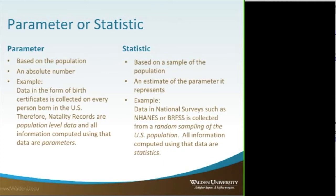Just a couple of basics before we get started. You may hear the term parameter or the term statistic. A parameter is the whole population — it's an absolute number. A statistic, on the other hand, is a sample. You usually don't have the opportunity to test the entire population, so you take a sample and then you try to infer from that sample back into that parameter.